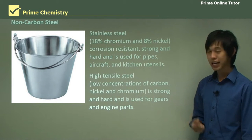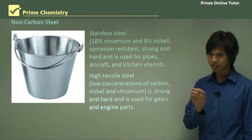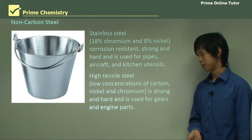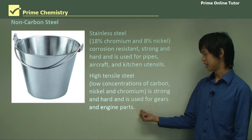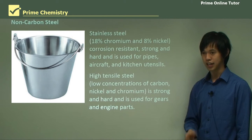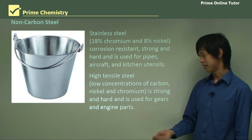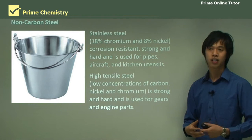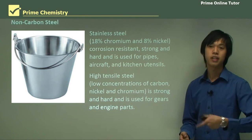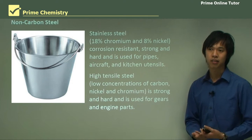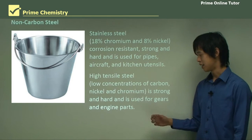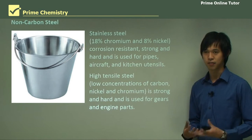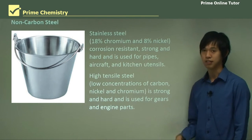High tensile steel may have a little bit of carbon, so it sort of still falls under the carbon category, but it usually has nickel and chromium as well. It's strong, hard, and corrosion resistant, used in gear and engine parts. In an engine, gears get quite hot, spin very fast, and experience lots of friction, so we want a very strong, corrosion-resistant steel for that.